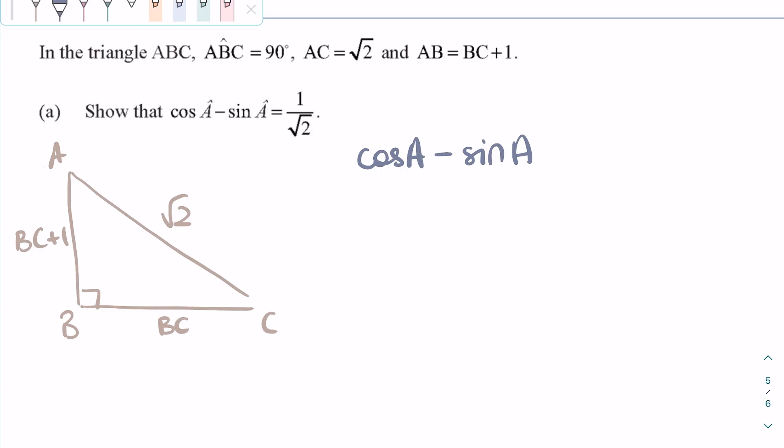We know cosine A minus sine A can be rewritten with the definitions of cosine and sine. Cosine is adjacent over hypotenuse, so BC plus 1 over square root of 2, and sine is opposite over hypotenuse, so BC over square root of 2. We can then combine the two fractions, and we get 1 over square root of 2, which is what we had to prove.